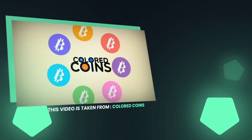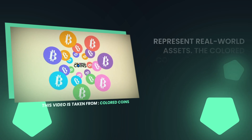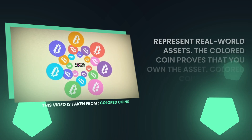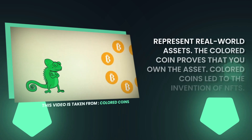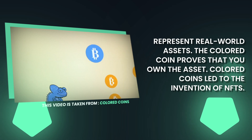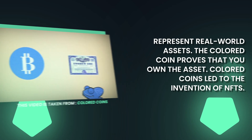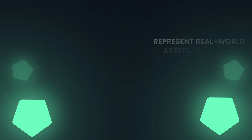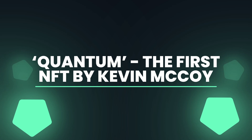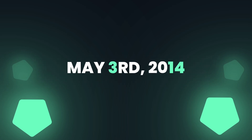Color coins are a type of Bitcoin that's used to represent real-world assets. The color coin proves that you own the asset. Color coins led to the invention of NFTs.